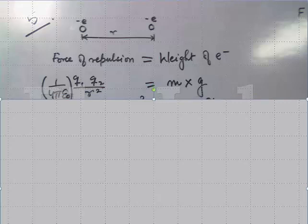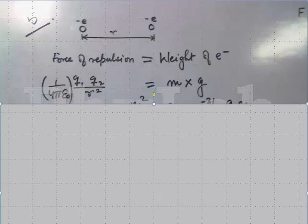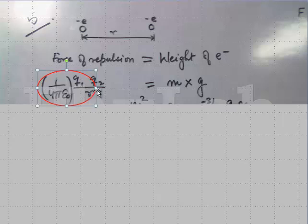Now, we all know from Coulomb's law, the force of repulsion can be taken to be equal to 1 upon 4 pi epsilon 0 q1 q2 by r square, whereas the weight of electron must be equal to m into g.